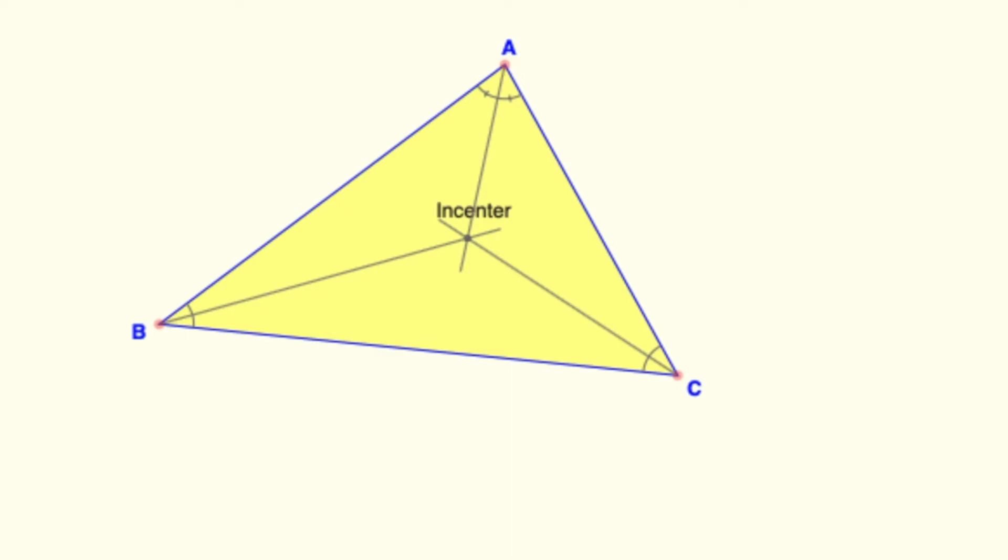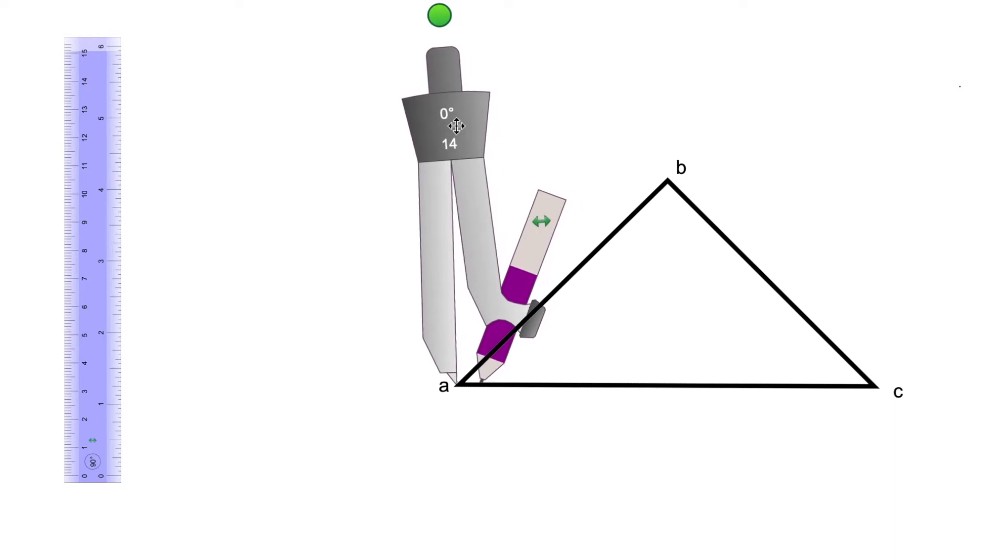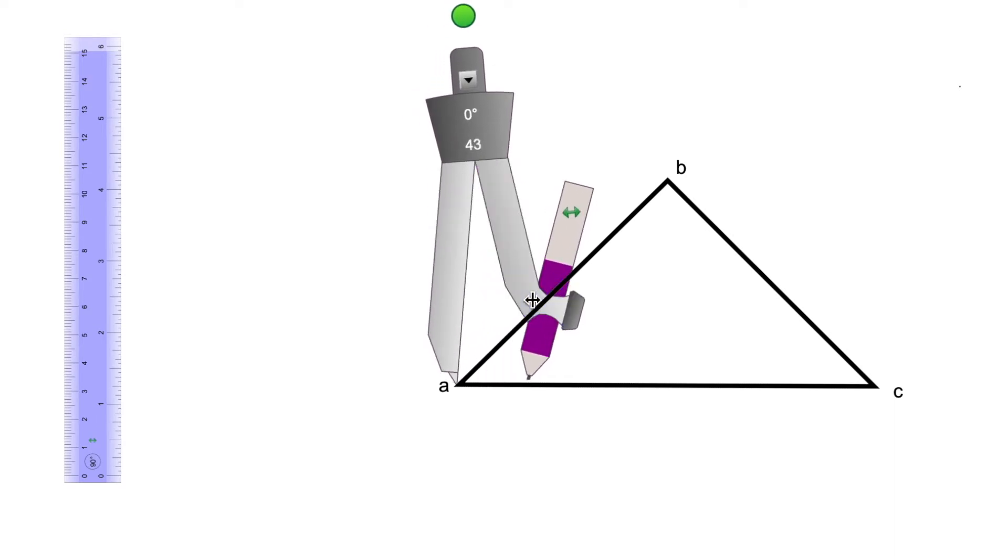Now let's grab our ruler and compass and trace the incenter of this triangle. We are going to draw some angle bisectors. I'm going to start with vertex A.